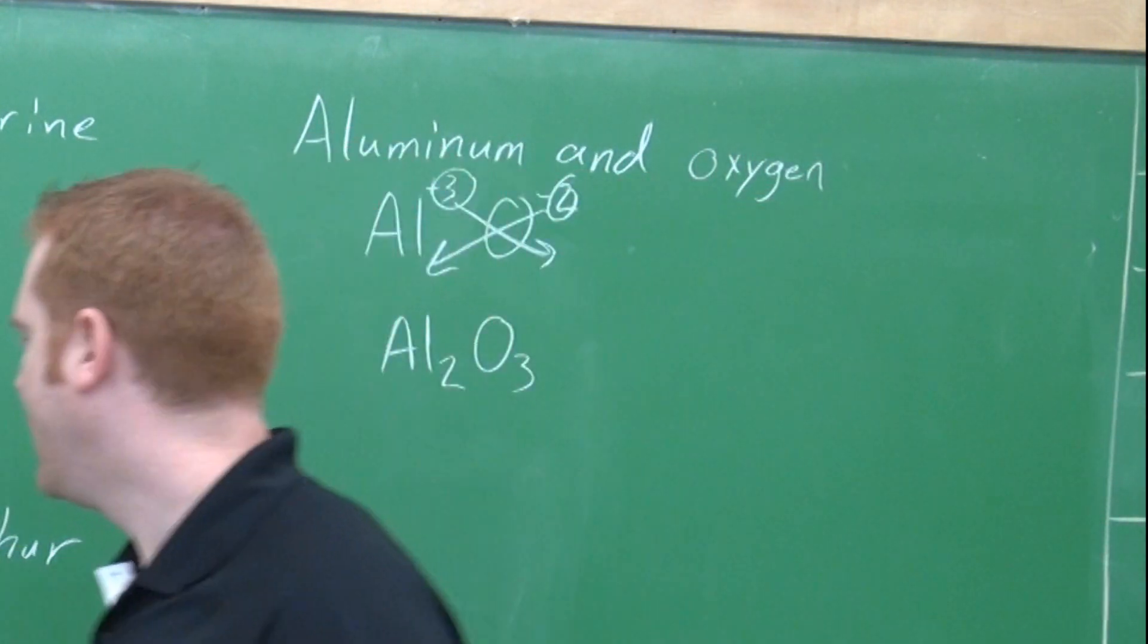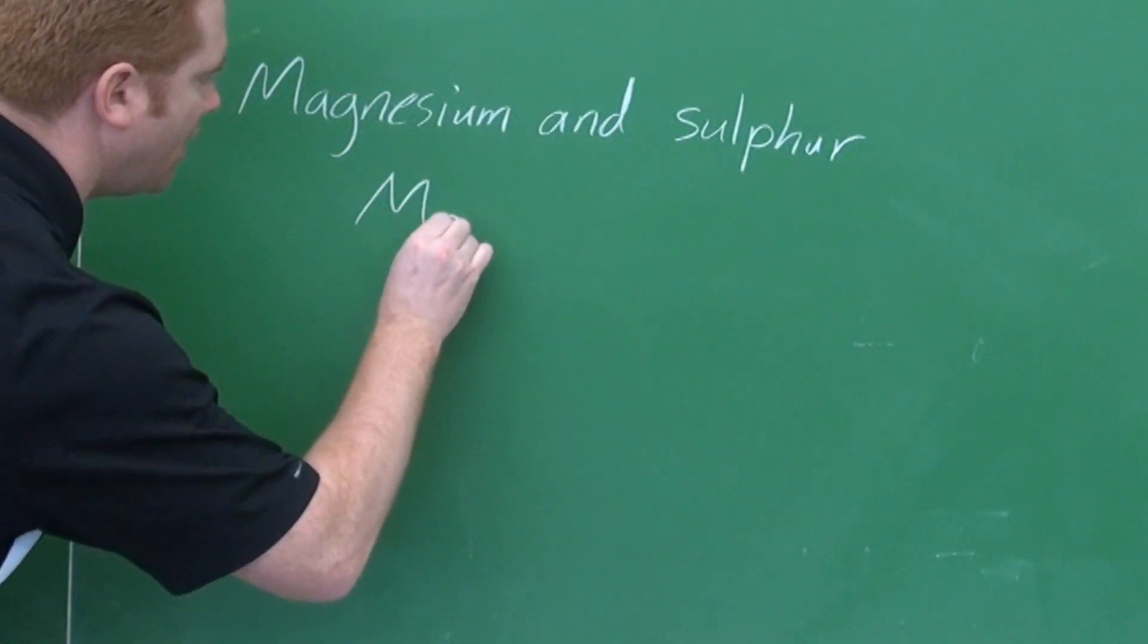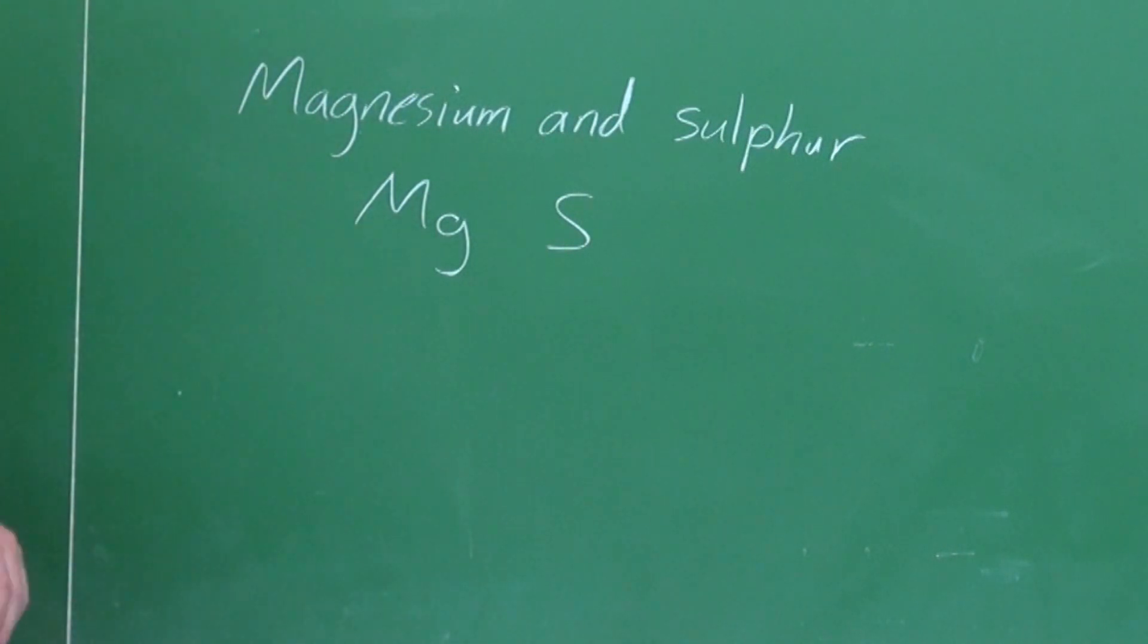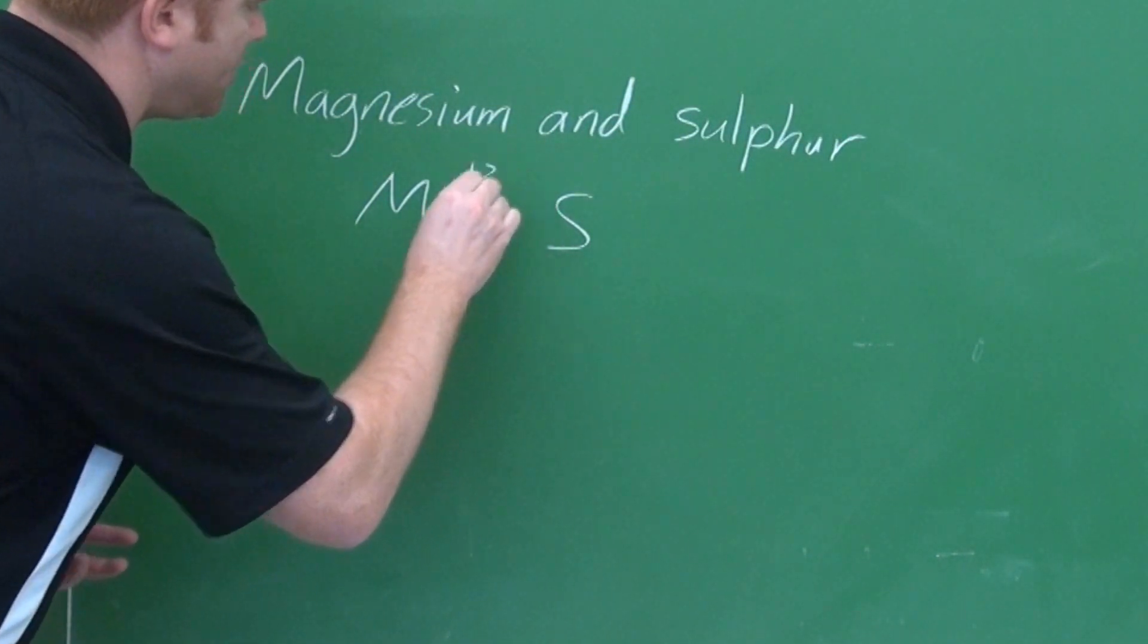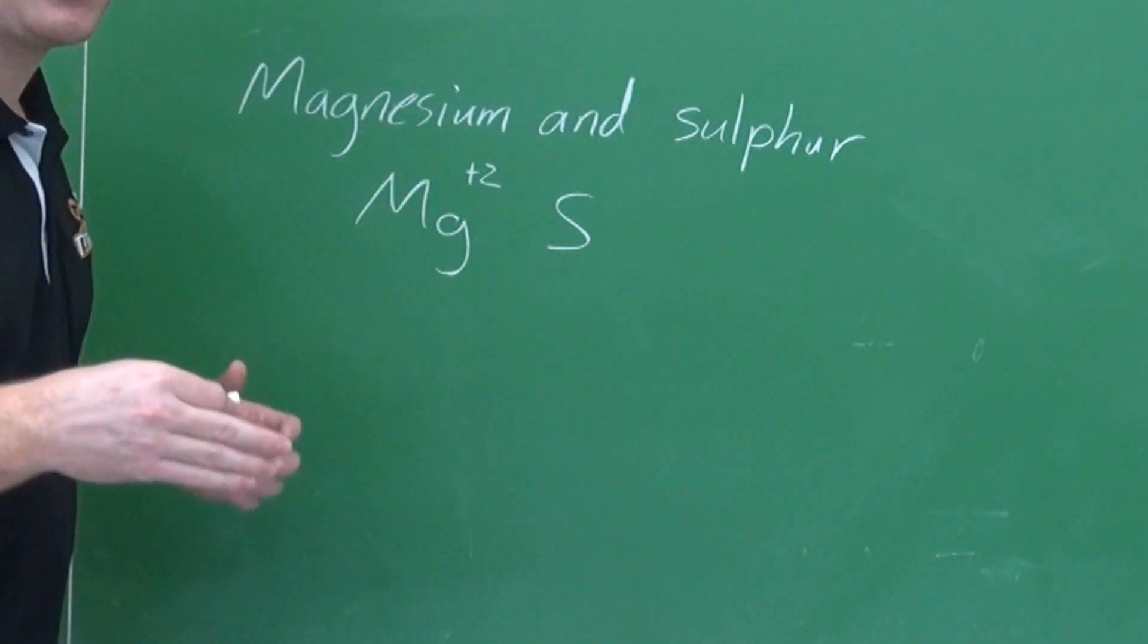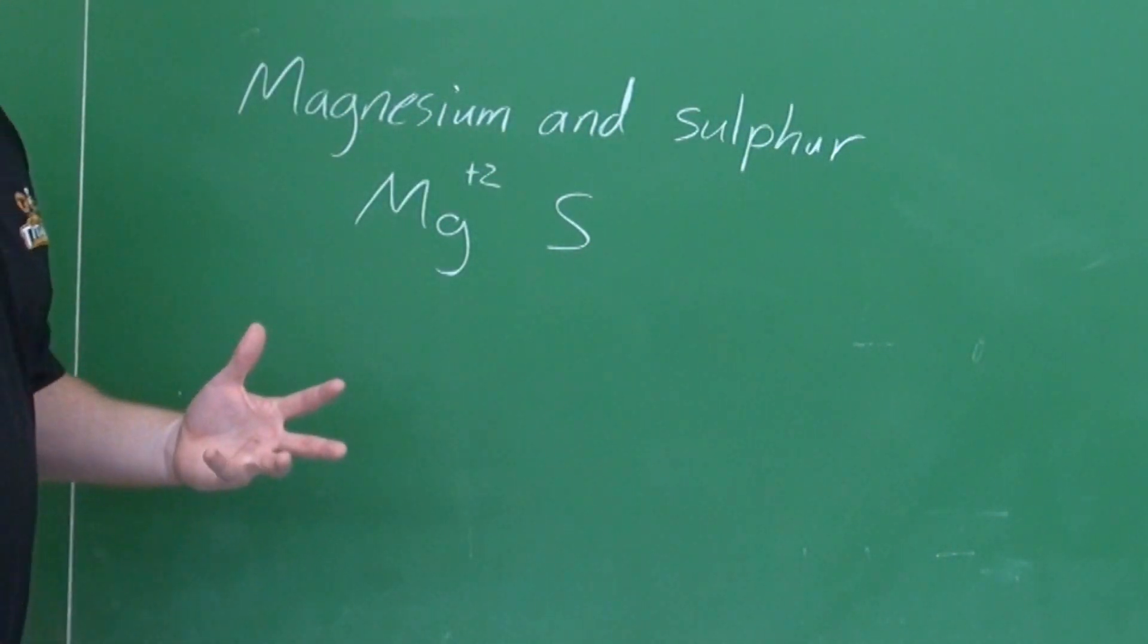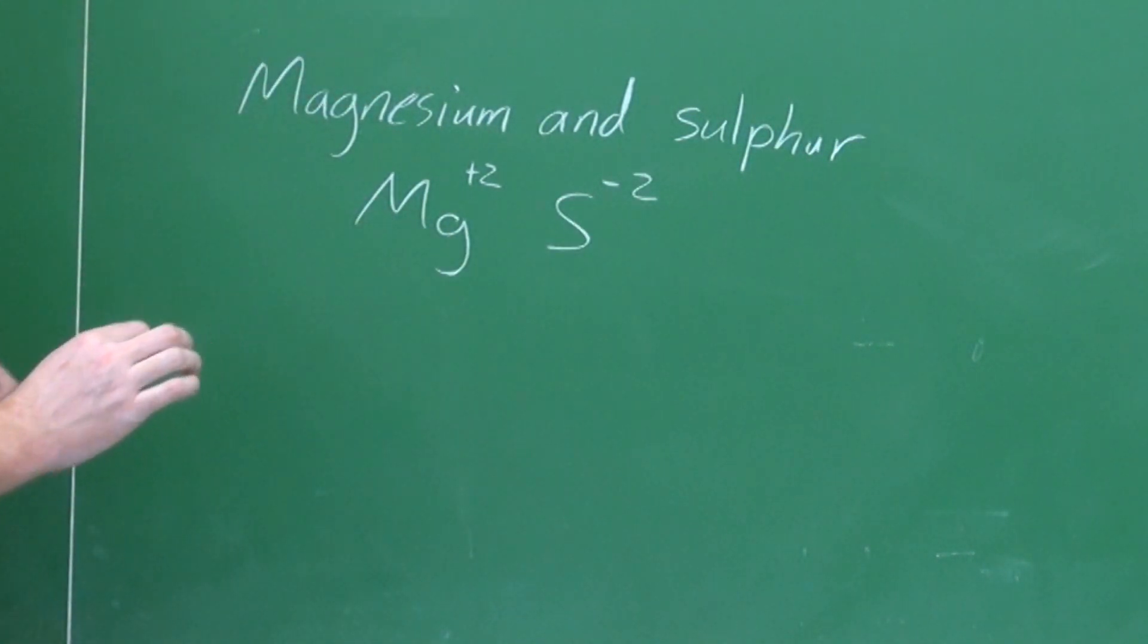One more example. Magnesium and sulfur. I write down the symbols, Mg, S. Now, I look for the charges. Magnesium, I look up to the top, Roman numeral is two. Therefore, it has two valence electrons. It wants to lose those two. It becomes plus two. Sulfur has six valence electrons because I look up, VI. Six valence electrons. It wants to gain two more to get to eight. It's going to be minus two. I crisscross.